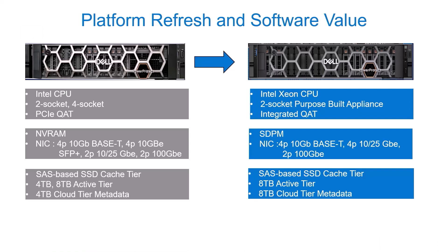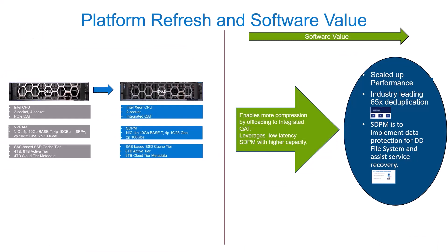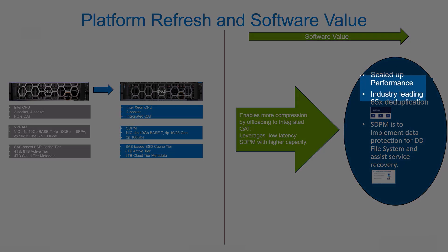In both models, DD-9410 and DD-9910, DDOS and cache tier are configured on the head unit's internal SSD drives. There is no external disk array enclosure required to configure cache tier for standalone models, which helps to reduce the usage of rack space. There is a single drive type used for active tier and cloud tier that is 8 TB. The new platform system enables more compression by offloading CPU workload to integrated QAT and leads to scale-up performance, providing industry-leading CystifyX deduplication.